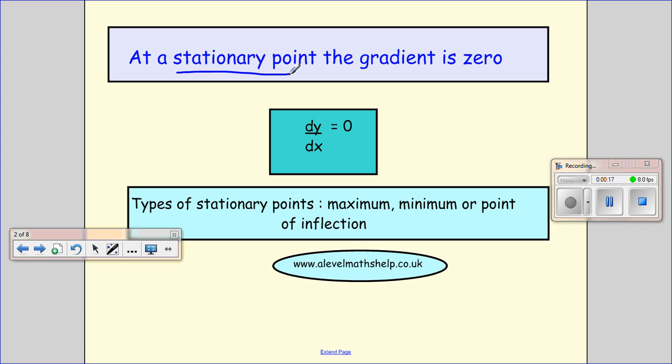So when we want to find a stationary point, what we do is take our gradient and set it to zero. We find our gradient by differentiating, that's finding dy by dx, and then set it to zero and you find the values of x that makes that zero. If we wanted to find the y coordinate, we would just substitute our x values back into our expression for y to find the y value. There's types of stationary points: we have maximums, minimums and points of inflection.